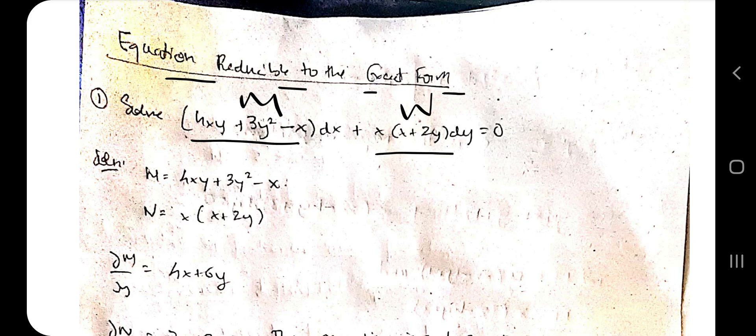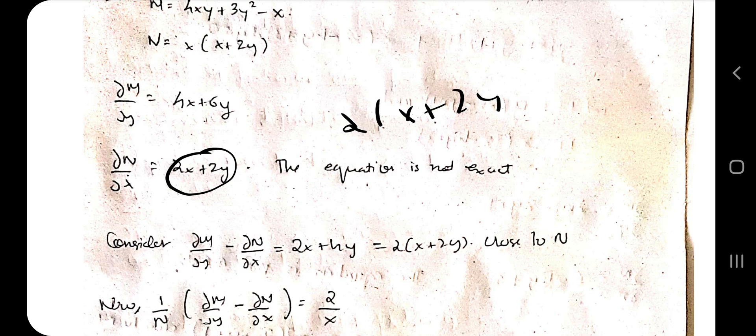The next topic is equations reducible to exact form. You again identify M and N, then compute del M by del y and del N by del x. This time they are not equal, so you need to find an integrating factor. First, subtract del M by del y minus del N by del x to get a result, then take common factors — for example, taking 2 common gives you x plus 2y.